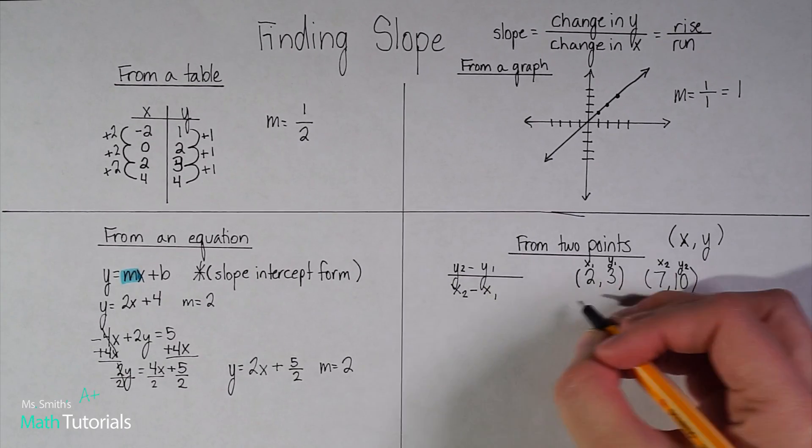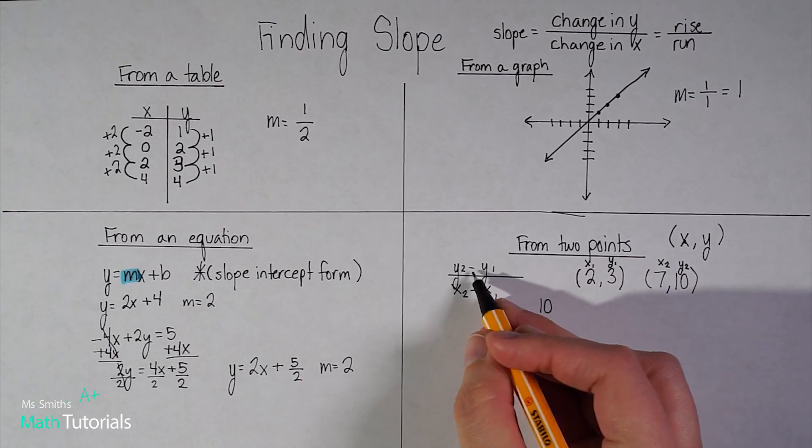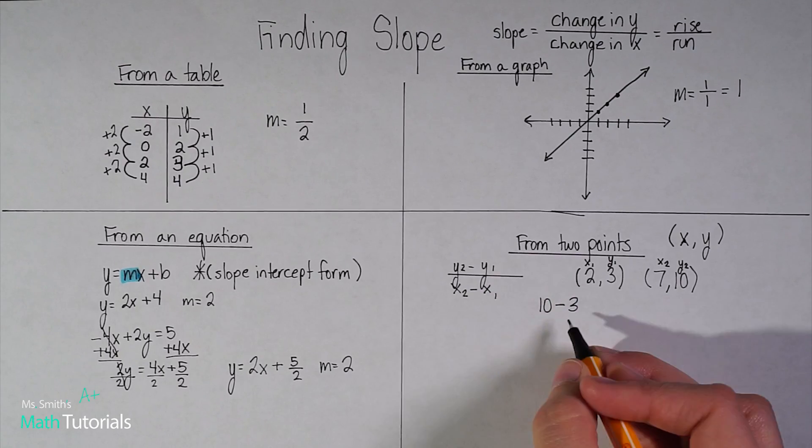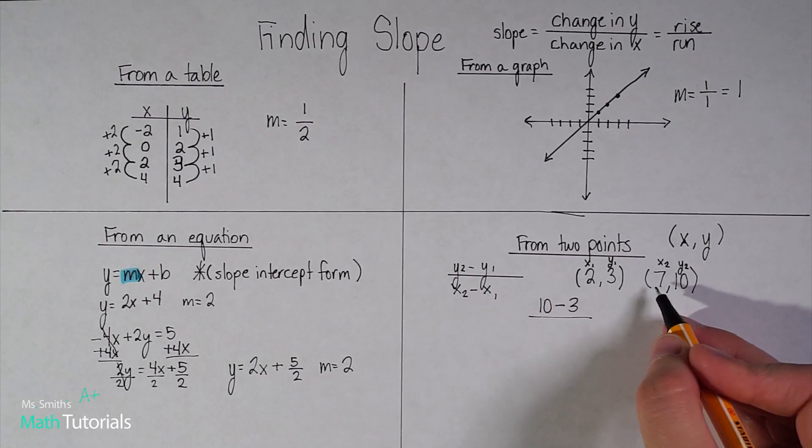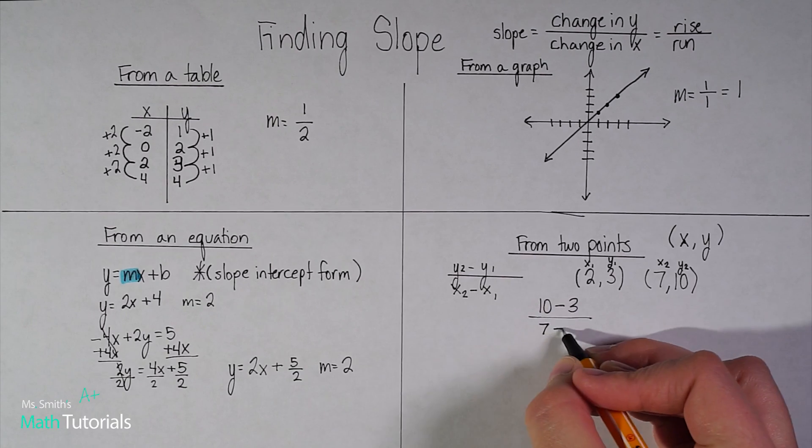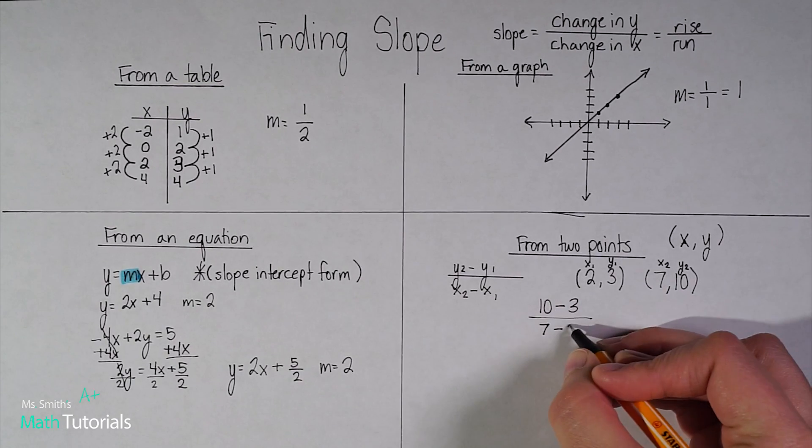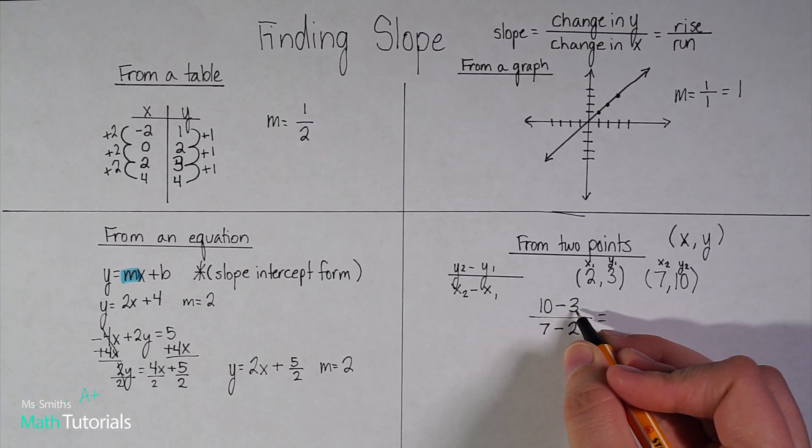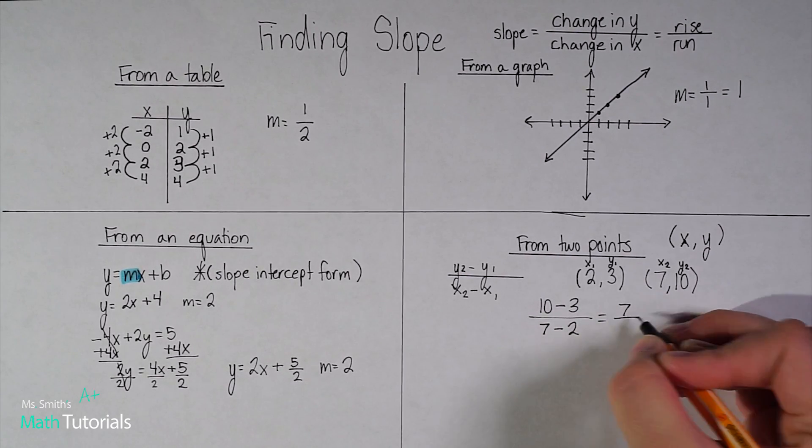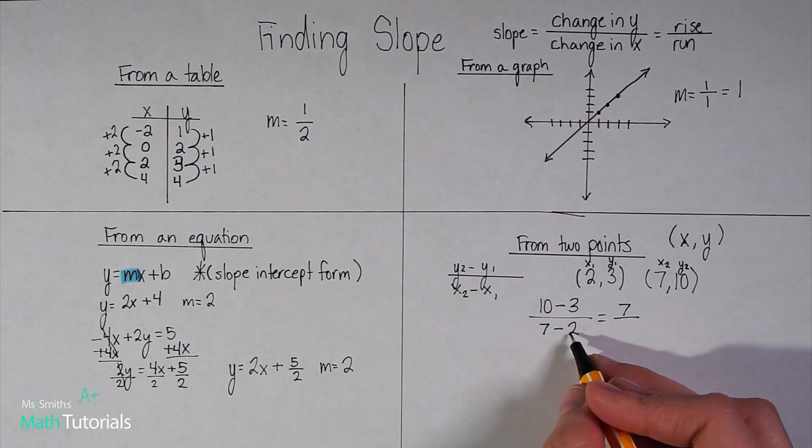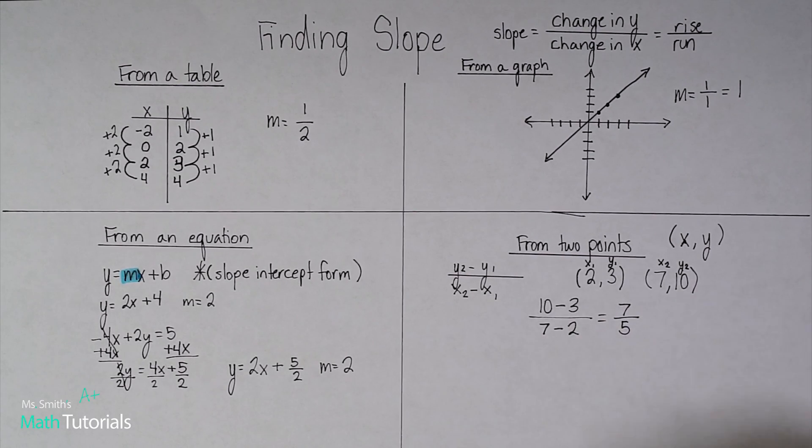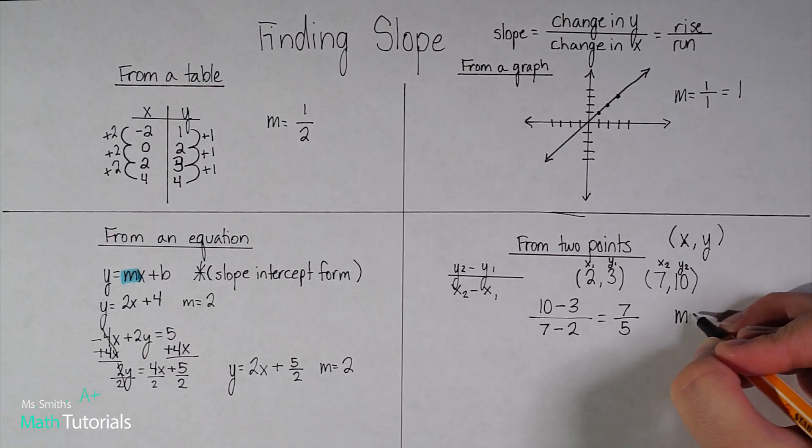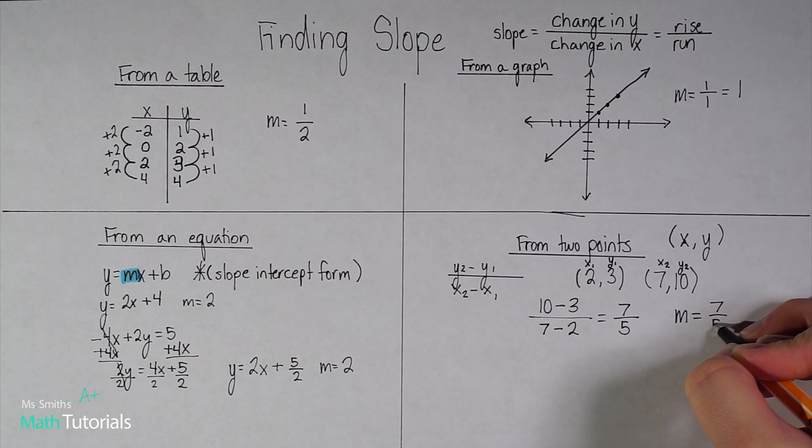So now I just need to plug in my numbers to the formula. So y2, which is 10, minus y1, which we said is 3, over x2, which is 7, minus x1, which is 2. Now we just solve. So 10 minus 3 is going to be 7. And 7 minus 2 is going to be 5. Now I can't reduce 7 over 5 anymore, so I just know that my slope is 7 over 5.